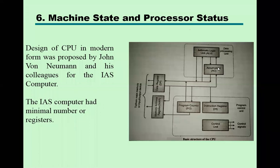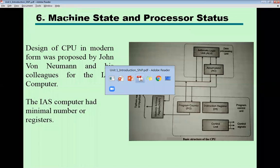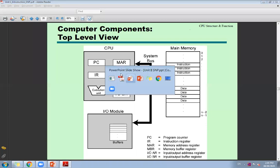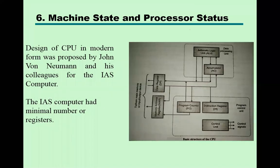The accumulator and data register (DR) act as a buffer — in our previous diagram its name is the memory buffer register (MBR), because it is like a buffer storage in between the memory and the CPU. You can easily see here in the diagram how it acts like a buffer between memory and the CPU. The data register DR is the same as MBR.